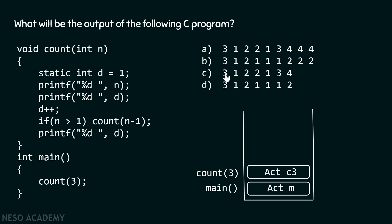All these options have value 3, so we cannot eliminate any option right now. After this printf function, there is one more printf function in which we are printing the value of d. d contains value 1, therefore 1 will get printed on the screen. Again, all options contain 1, so we cannot eliminate any option. After this, we increment the value of d so that d becomes 2. Then we have an if construct which says if n is greater than 1, then call count(n-1). As n is equal to 3 and 3 is greater than 1, we call count(2).